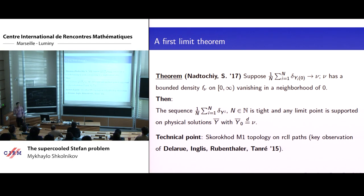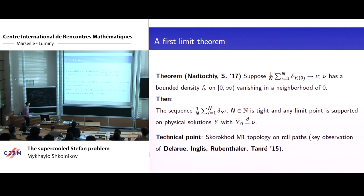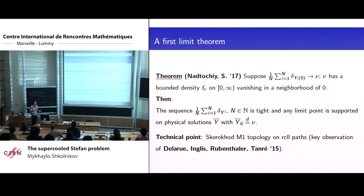The first result proved with Sergey two years ago is the existence result. It says that the sequence of particle systems, as N becomes large, is tight. Every limit point is indeed a global solution of the supercooled Stefan problem. In particular, these global solutions actually do exist.